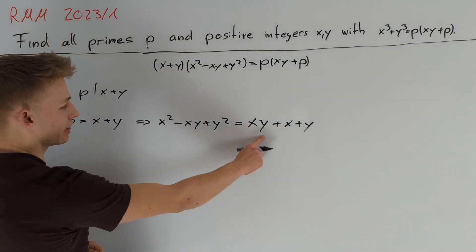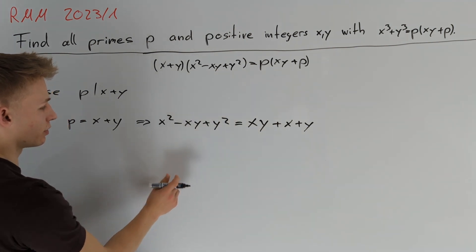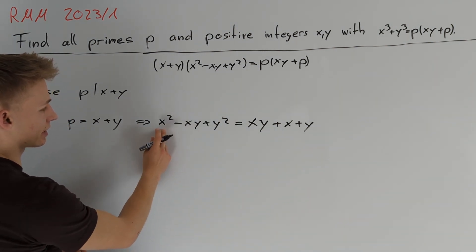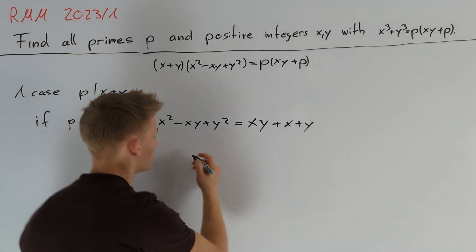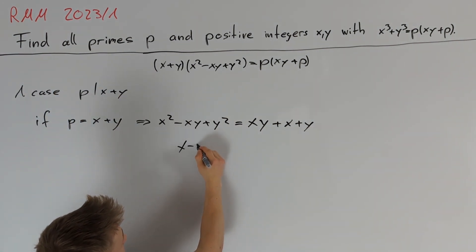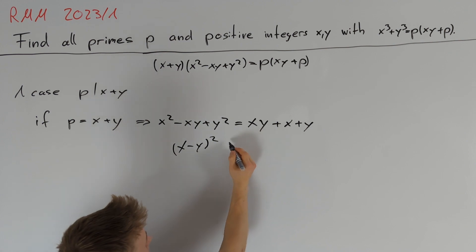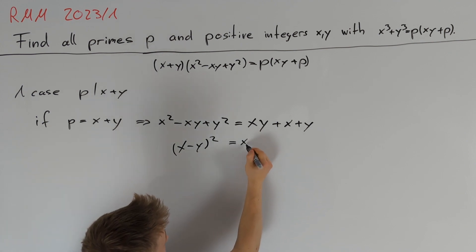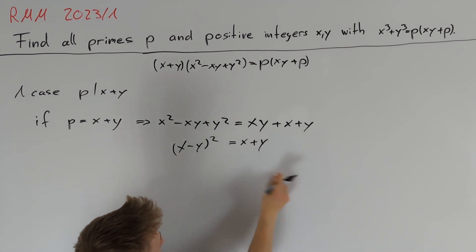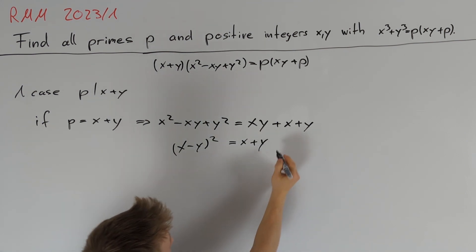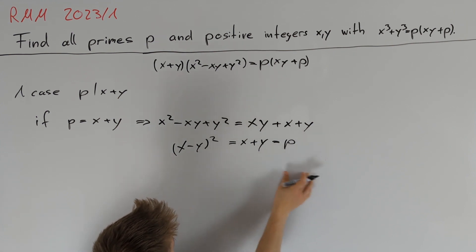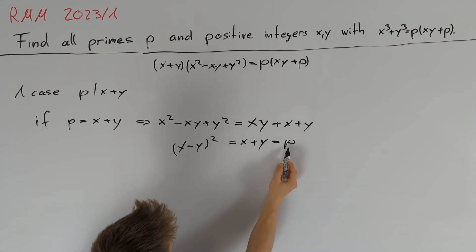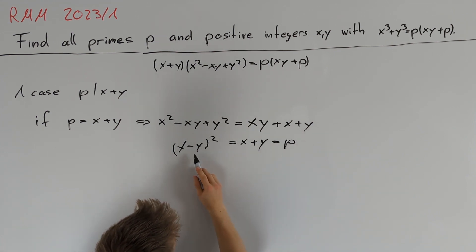Bringing xy to the left-hand side gives x² - 2xy + y² = (x - y)², which must equal x + y. But since x + y = p is prime, this is a contradiction because a prime number can't be a perfect square.